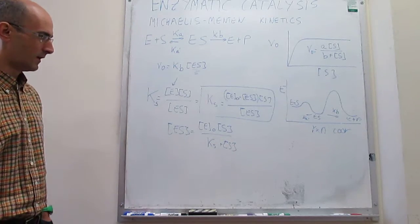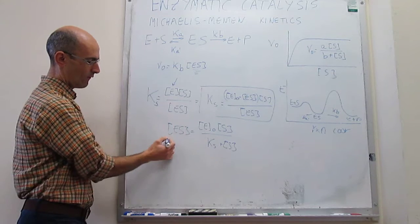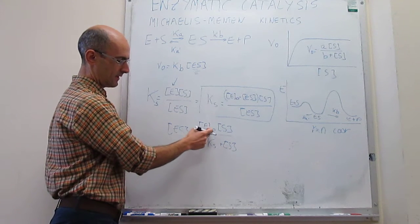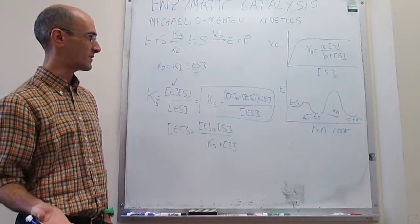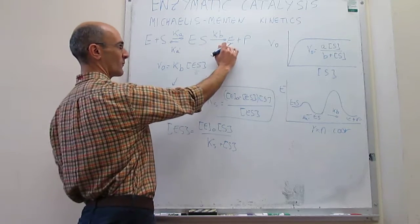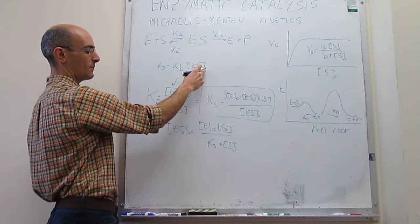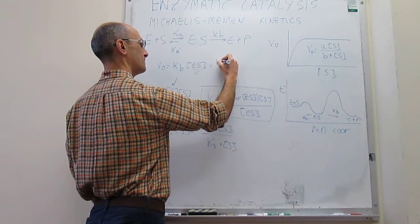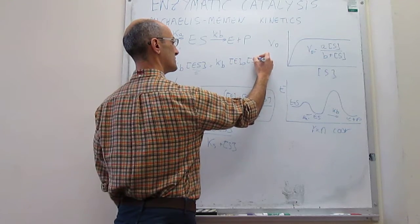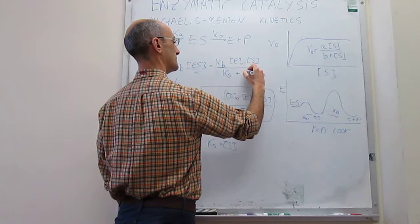We now have everything needed to find the rate law for the overall process. The rate of product formation equals K_b times [ES], which we just solved for. Substituting in, this equals K_b times E_0 times [S] over (K_S + [S]). Note that K_S equals K_a' over K_a — the ratio of those two rate constants. The product of K_b and E_0 gives us a constant A, and K_S is another constant B, confirming that the pre-equilibrium treatment captures what is measured experimentally.